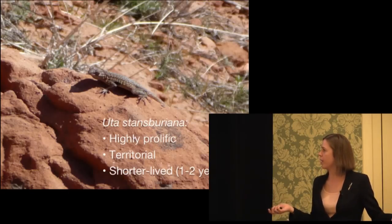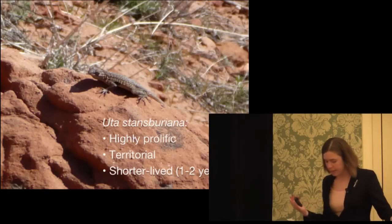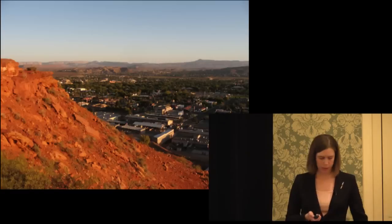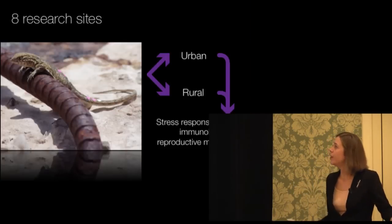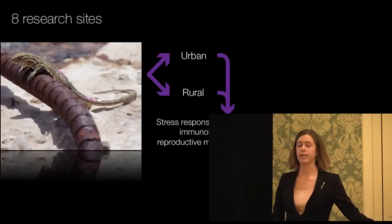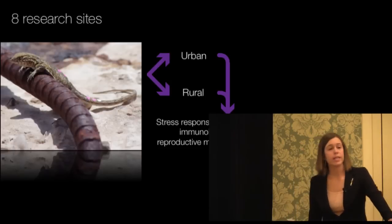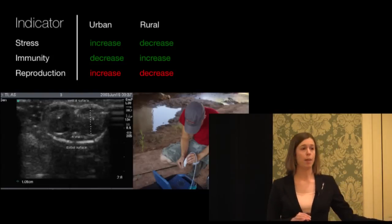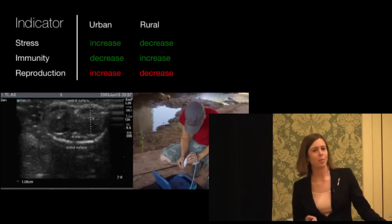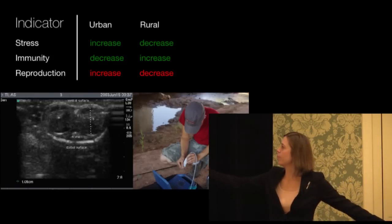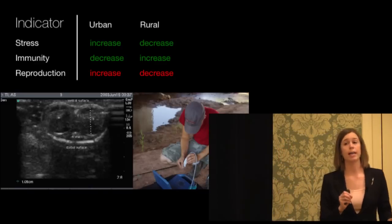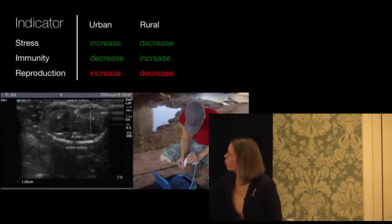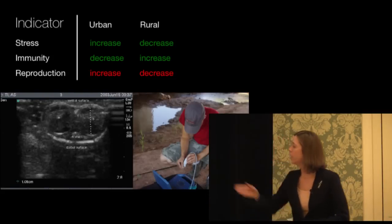We're using a very similar design — we have eight research sites across this urban environment, half rural and half urban. And we're measuring the same endpoints that I talked about for the marine iguanas. When we look at stress response, we're seeing something very similar to what we saw in the marine iguanas: we're getting elevated stress reactivity in the urban environment. We're also getting decreased immunity in the urban environment, again just like we saw at these tourist sites in the Galapagos.